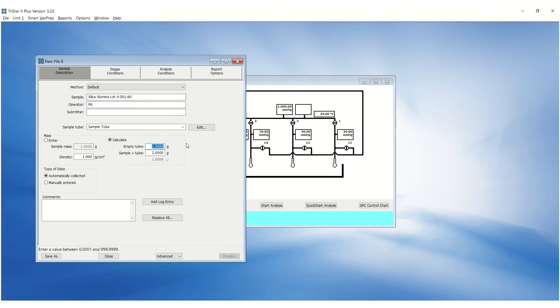Select Calculate, then enter the empty tube and after degas sample plus tube mass.